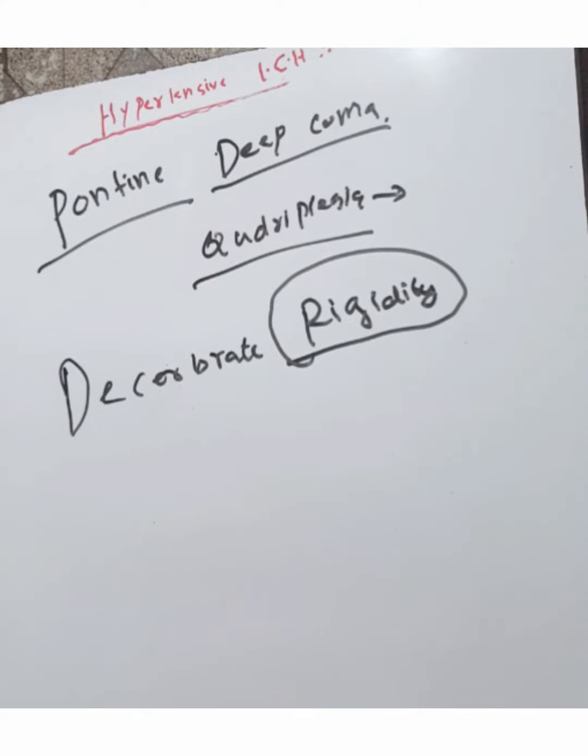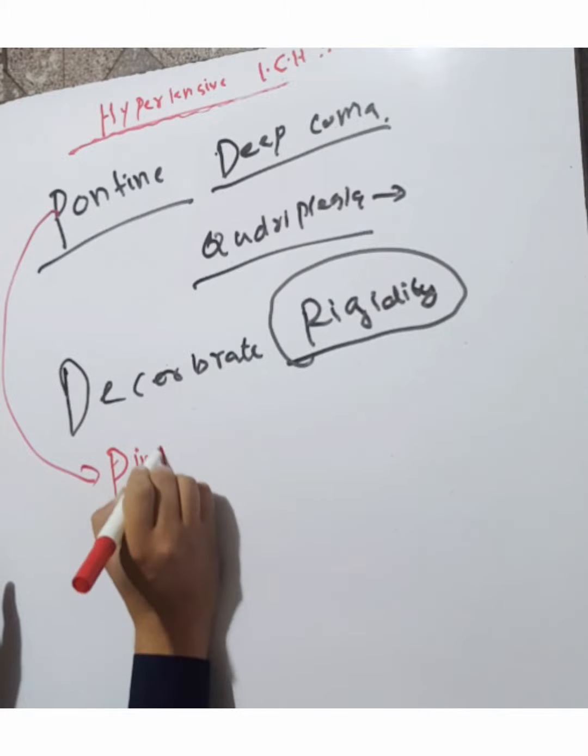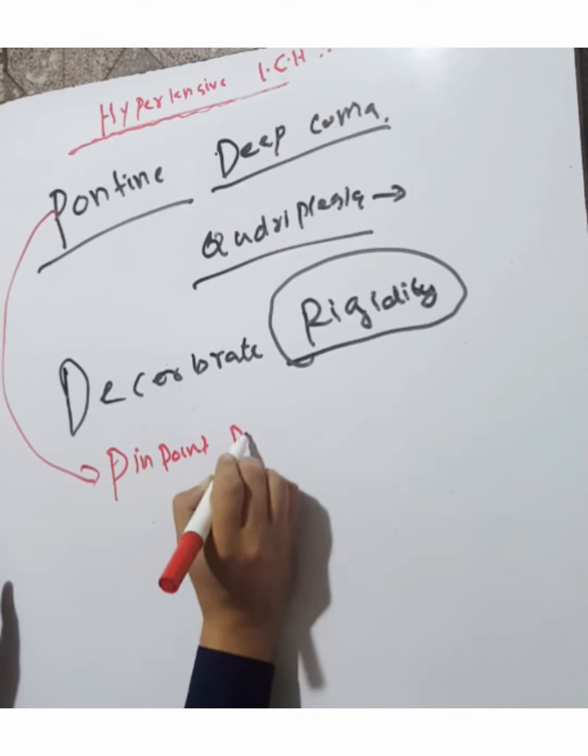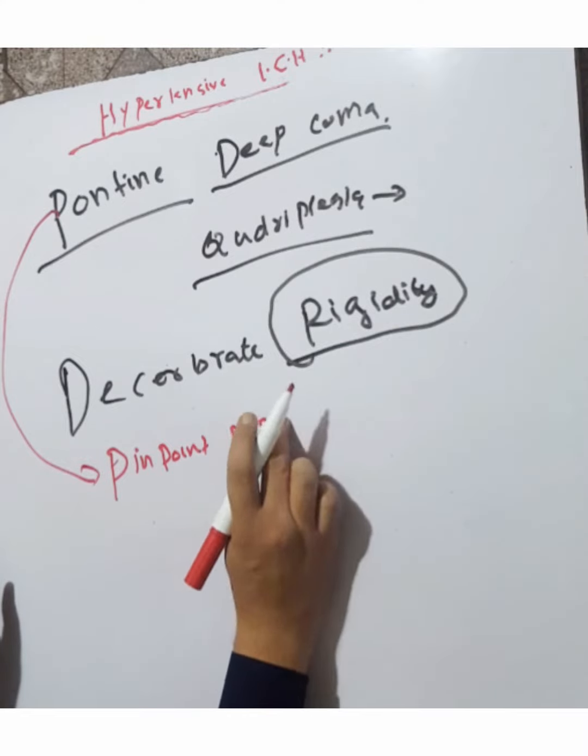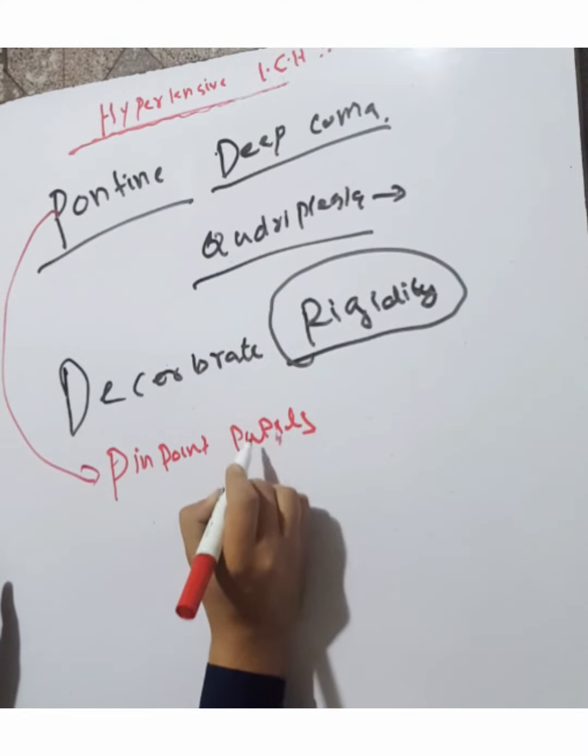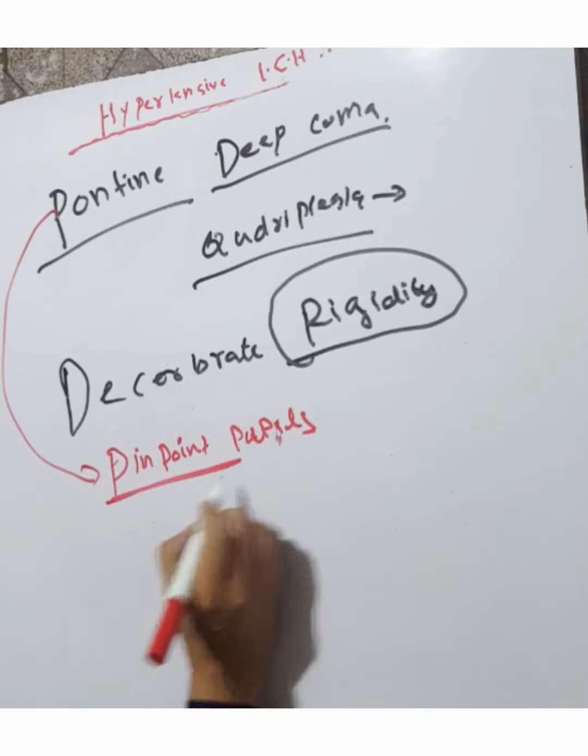In Pontine Hemorrhage, there are pinpoint pupils. These pinpoint pupils are 1mm in diameter and react to light.